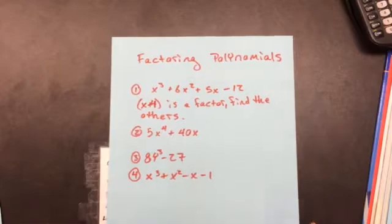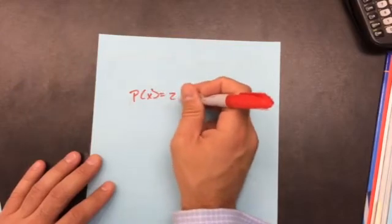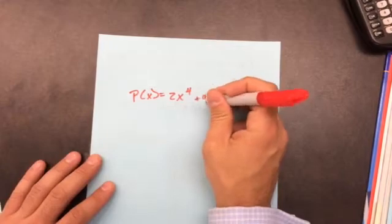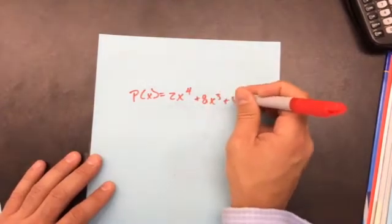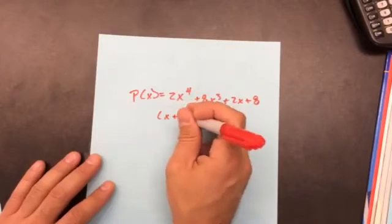These are the problems that you need to be able to do. So the first thing, if they give me something like p(x) = 2x^4 + 8x^3 + 2x + 8, and it says this is a factor, x + 4.